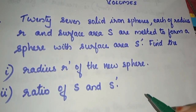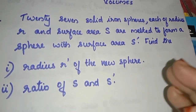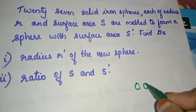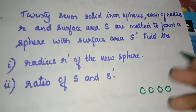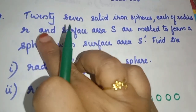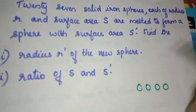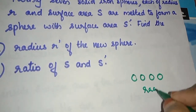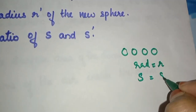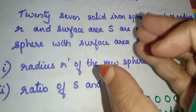We have 27 solid iron spheres. Each small sphere has radius R and surface area S.